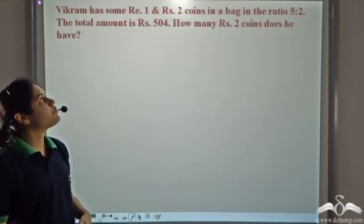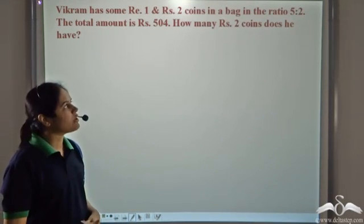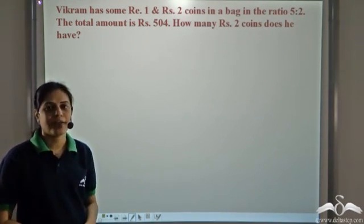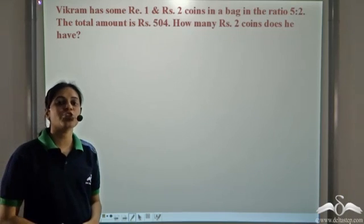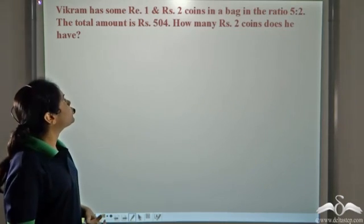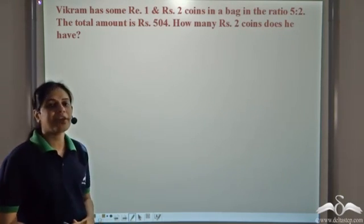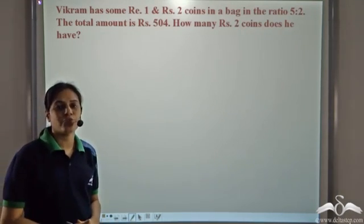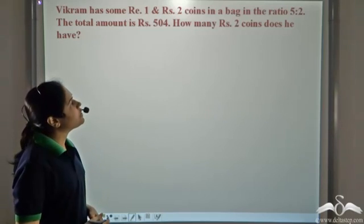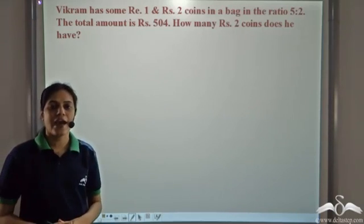Vikram has some Rupee 1 and Rupee 2 coins in a bag in the ratio of 5 is to 2. The total amount is Rupees 504. How many Rupee 2 coins does he have?